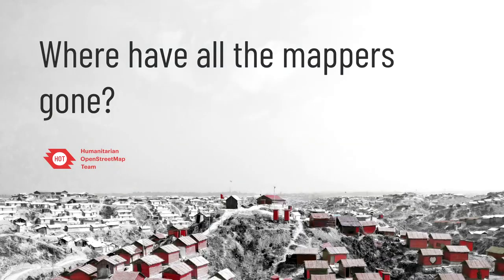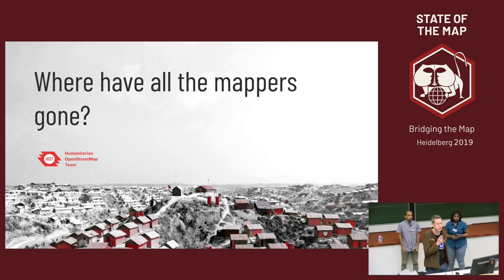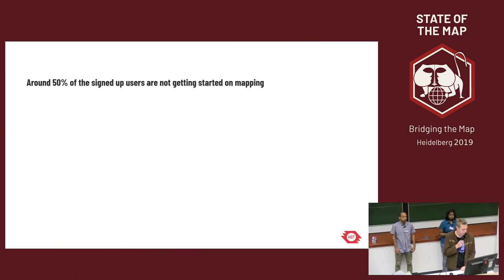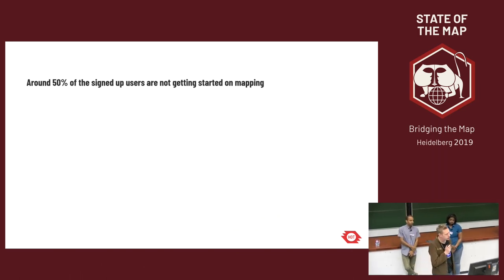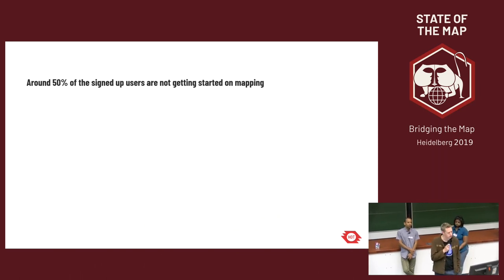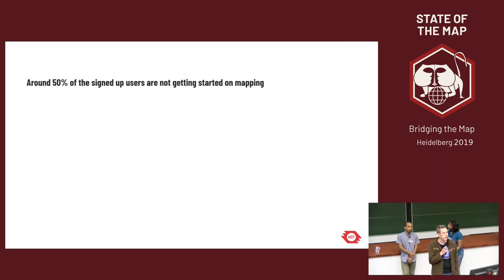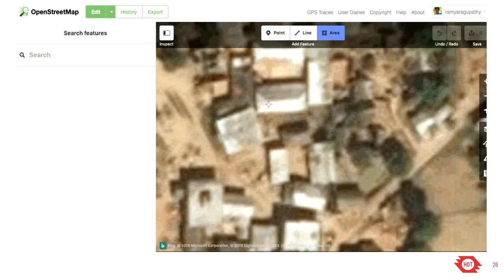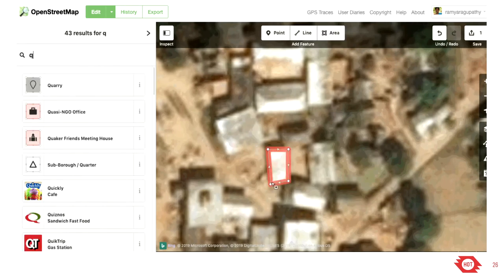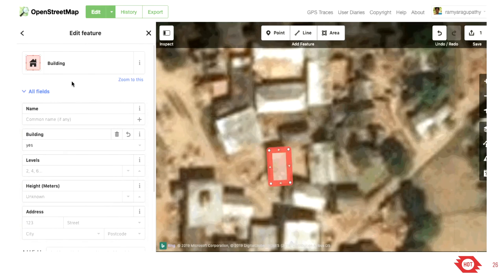One of the things we realized is: where have all the mappers gone? A lot of them are there but do not necessarily start mapping. We realized that half of them were not doing even one task after signing up, and we wondered why. We discovered several things that made it hard — jumping out to another editor and then coming back is not part of a real user flow. The iD integration is definitely one of the big steps we want to take here, so people can map within the Tasking Manager and don't have to navigate back separately.